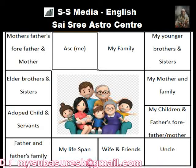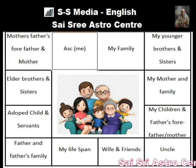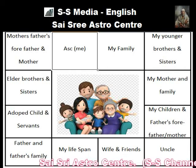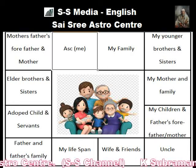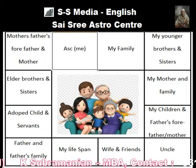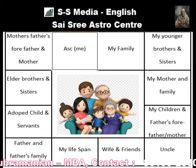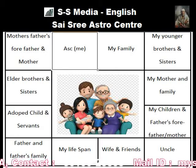The eighth house indicates life span. The ninth house indicates the father and father's family — generally the father, younger brothers and elder brothers, sisters and all.